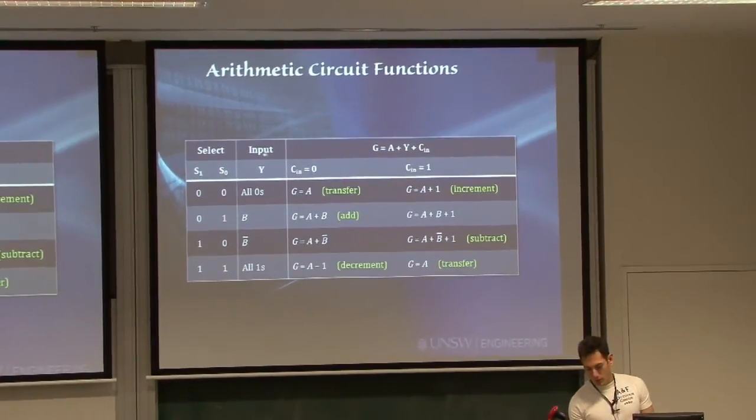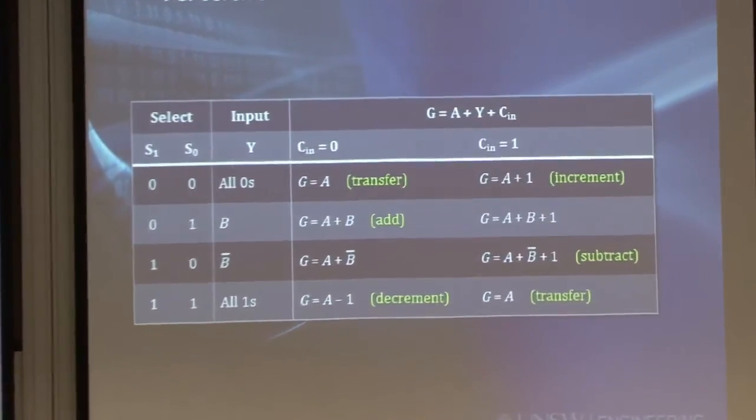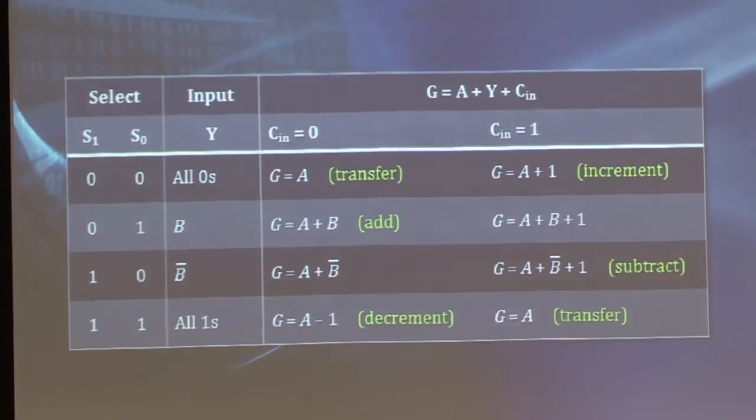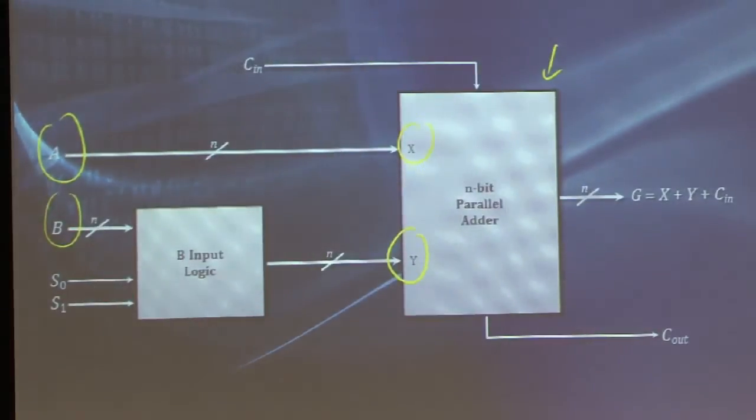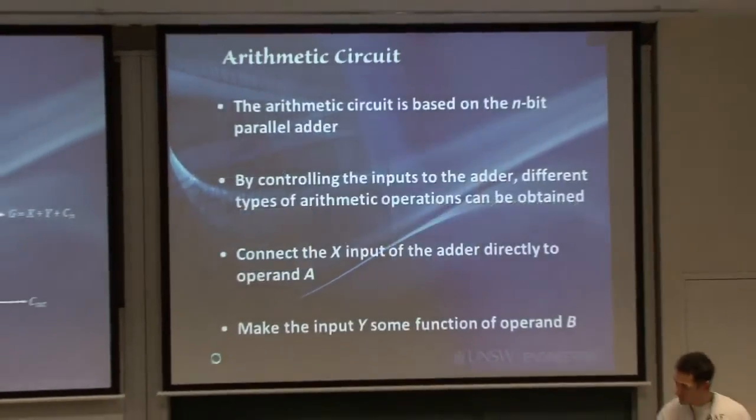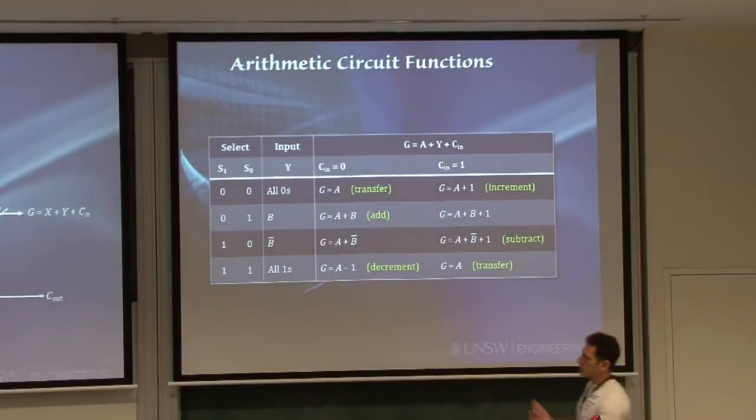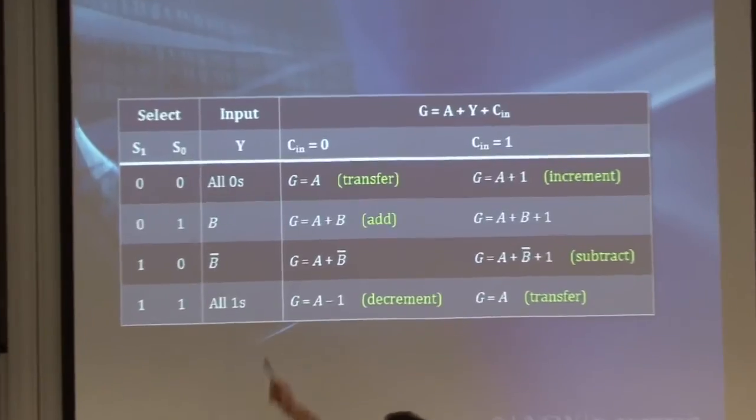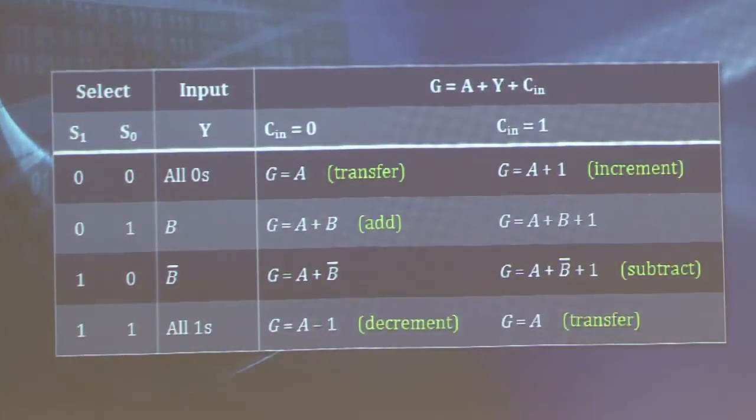And this is the kind of stuff that I might have in this logic unit operating on the operand B. I might want to steer it to be all zeros, meaning ignore B altogether. I'm manipulating B using the select lines in order to output from this B input logic into the input Y of the adder. I can choose to ignore B altogether and make the Y input be all zeros. In this case, the adder will just add A plus 0, which is A.